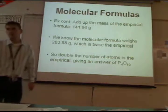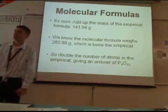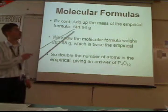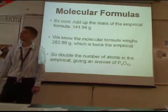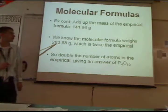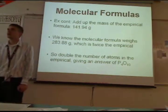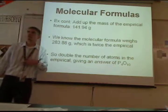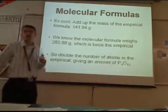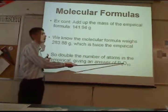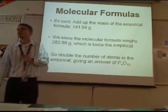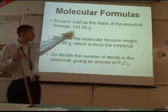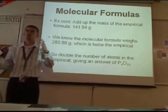What I would do is add up the mass of the empirical formula. If you add up the weight of 2 phosphoruses and 5 oxygens in P2O5, you get 141.94 — which is just about half of 283.88. So the empirical formula is half of the molecular formula. Since the empirical formula was P2O5, the molecular formula is P4O10. Basically, find the empirical first, then figure out the difference in weights and multiply by 2, 3, or 4 as needed.